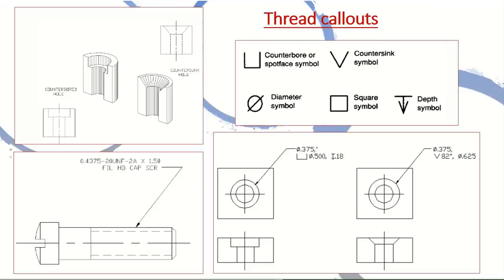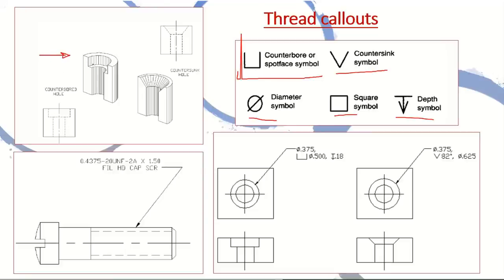Now let's take a look at some thread callouts and symbols. The most commonly used thread callouts on drawings are the counterbore or spot face symbol — the open rectangle — the V-shaped countersink symbol, the diameter symbol, the square symbol, and the depth symbol. The counterbore hole has a larger diameter up to a certain height and then a smaller diameter for the rest of the threaded depth, as made clear in the cross-sectional view.